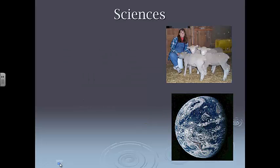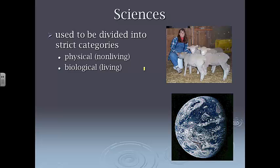This first thing we're going to back up just a little bit and talk about science. Science historically used to be divided into two pretty strict categories. We had physical science, which mostly related to non-living things. We also had biological sciences, which related to living things.